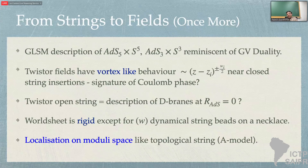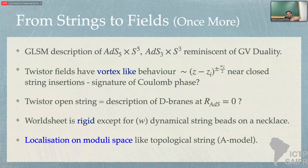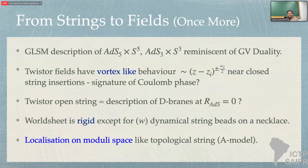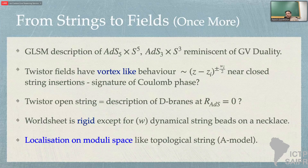The gauge linear sigma model is very reminiscent of what we had for the conifold. The twistor fields, if one looks at correlators — both for AdS3 and we believe for AdS5 as well — have vortex-like behavior with non-trivial winding around the closed string insertions. In some sense, the core of the vortex is where the Coulomb phase is nucleated, where the theory is un-Higgsed. This is what is happening even in these AdS5 and AdS3 gauge linear sigma models. The twistor open string, we believe, would be in some ways the description of D-branes in this closed string theory appropriate for the small-radius limit.